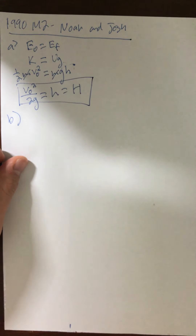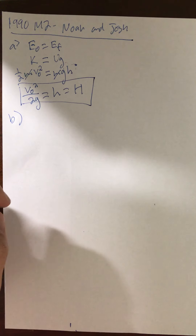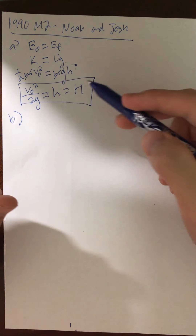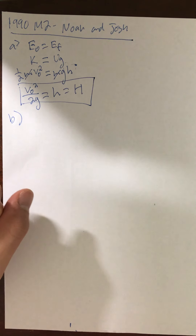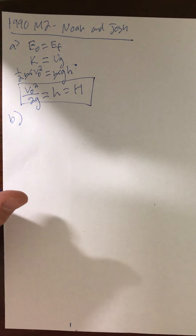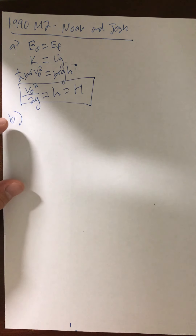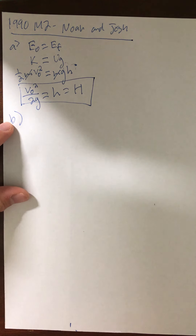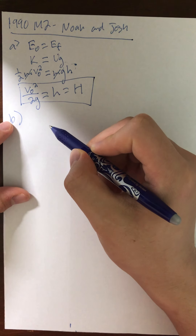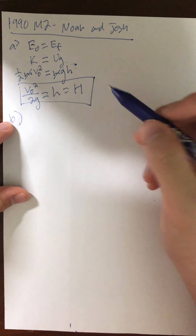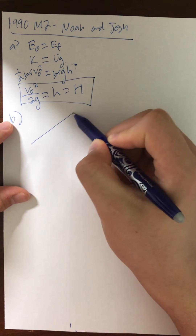Now for part B, the problem states that if the incline is rough with a coefficient of sliding friction mu, determine the maximum height to which the block will rise in terms of capital H and other given quantities. In this case, we're looking at a force that's impacting the motion of the object as it goes up the incline. To better understand what exactly this force is doing, let's draw a free body diagram.